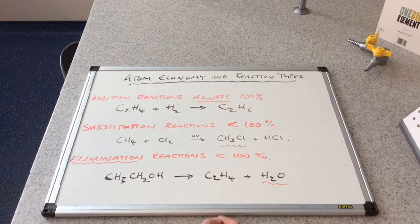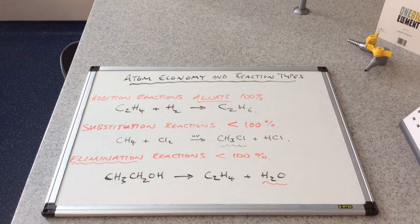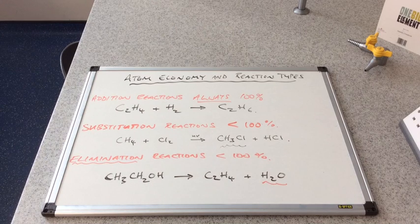And you can see there that the products are, notice I said products are ethene and water. And so if we're just interested in the ethene, then this water is a by-product, a waste product, and that's going to reduce the atom economy from 100%.